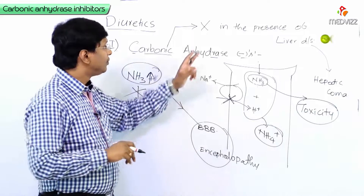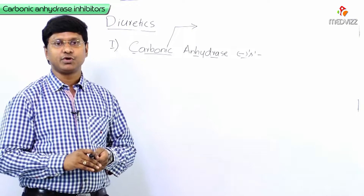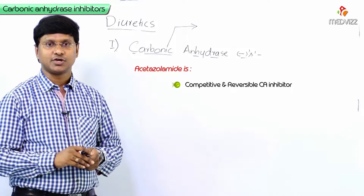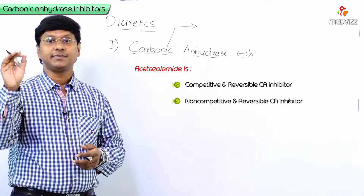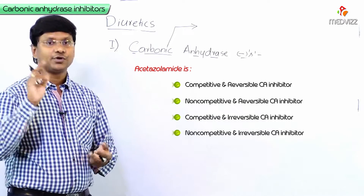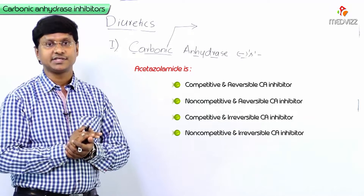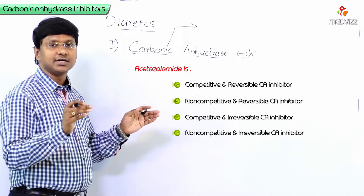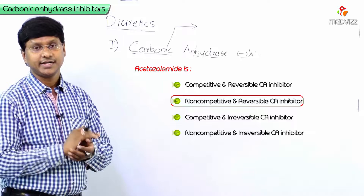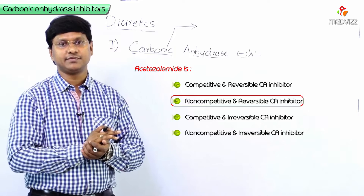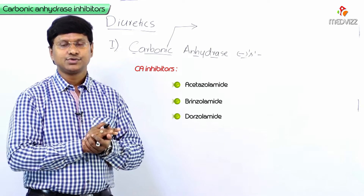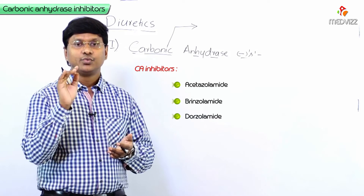Coming back to the review question: option A was competitive and reversible carbonic anhydrase inhibitor; option B, non-competitive and reversible; option C, competitive and irreversible; option D, non-competitive and irreversible. After discussion, the conclusion is that acetazolamide is a non-competitive and reversible carbonic anhydrase inhibitor. Examples of carbonic anhydrase inhibitors include acetazolamide, brinzolamide, and dorzolamide — all of which are weak diuretics.